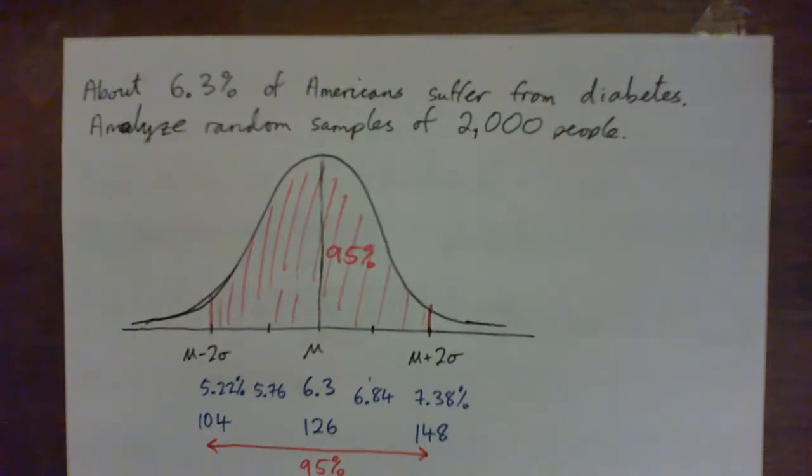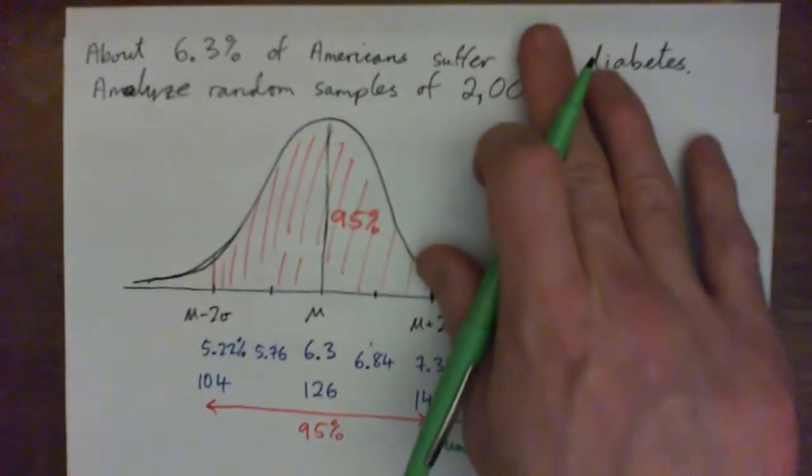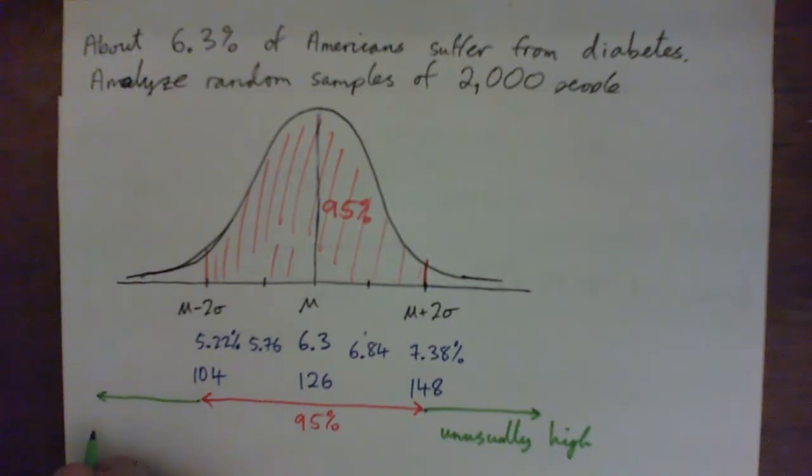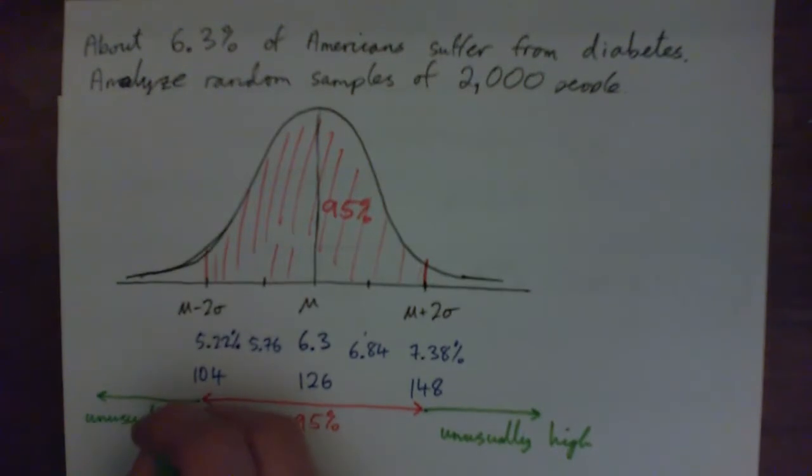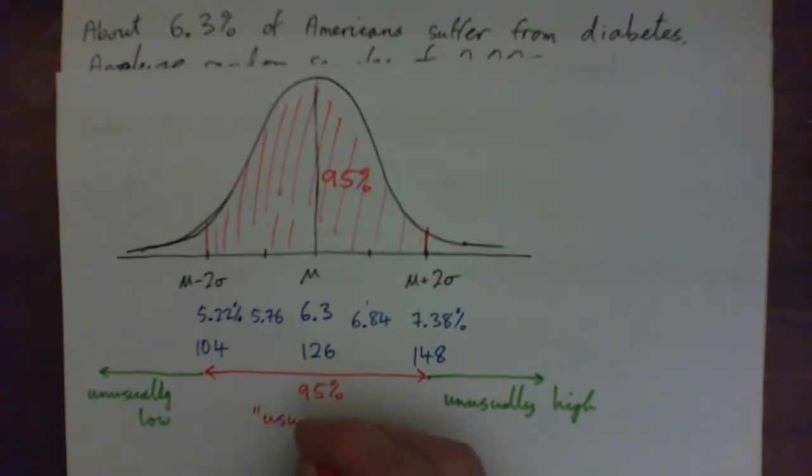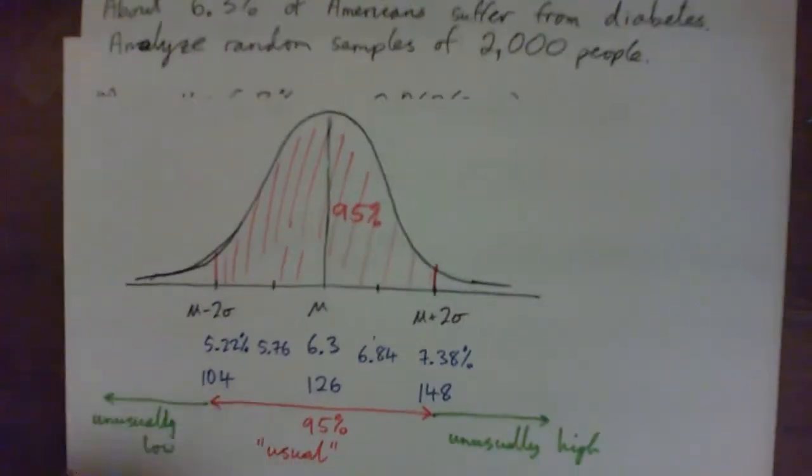You with me? Alrighty. So that means that if you took a random sample of 2,000 people, and more than 148 of them, or more than 7.38% of them had diabetes, we would call that unusually high. And if we took a random sample of 2,000 people, like in a particular town, and we found that in that town of 2,000 people, less than 104 of them had diabetes, we would call that unusually low. And why is it that it is this way? That's just the way the world, the world has agreed, for some reason, that if you're in the 95% range in the middle here, that's considered usual or normal, or not unusual. Usual or not a big deal. But if you're down here or you're up here, that's a big deal, right?